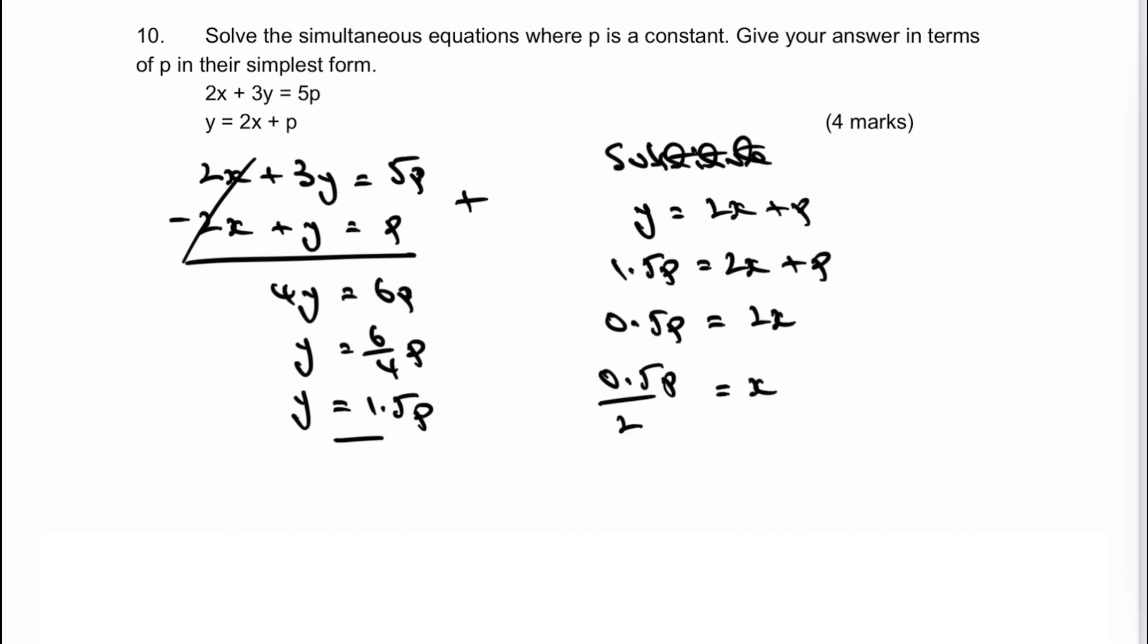Therefore, 0.5 divided by 2 is 0.25. So in this case, x equals 0.25p. That would be the answer to the question.